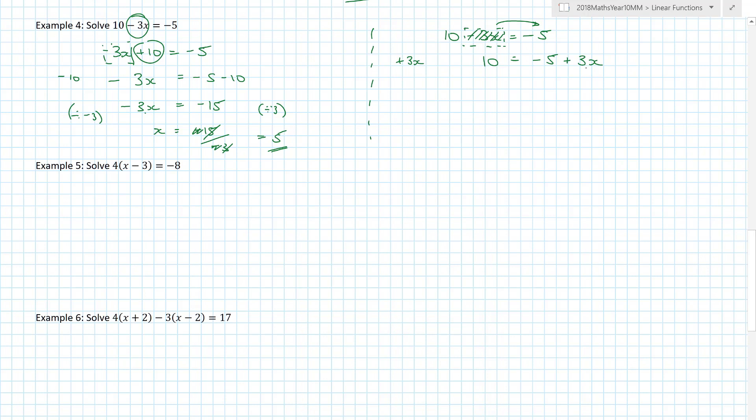Obviously, I want the x term on its own. I've still got two terms, so I now want to get rid of the minus 5 by adding 5 to both sides. That gives me 15 equals 3x, so x equals 15 divided by 3, which is 5. It doesn't actually matter which side of the equation you have x. By convention, we write x equals 5.